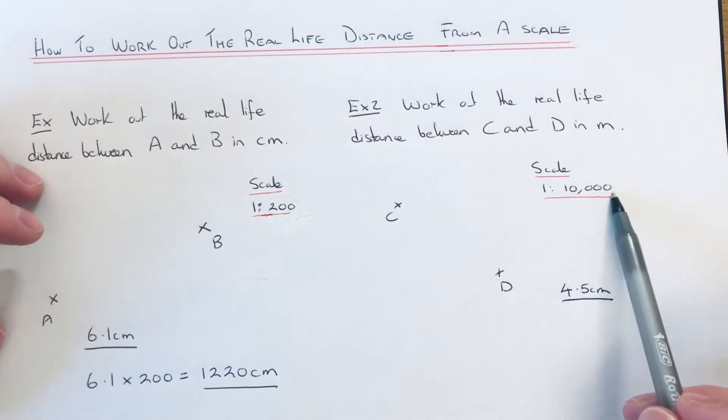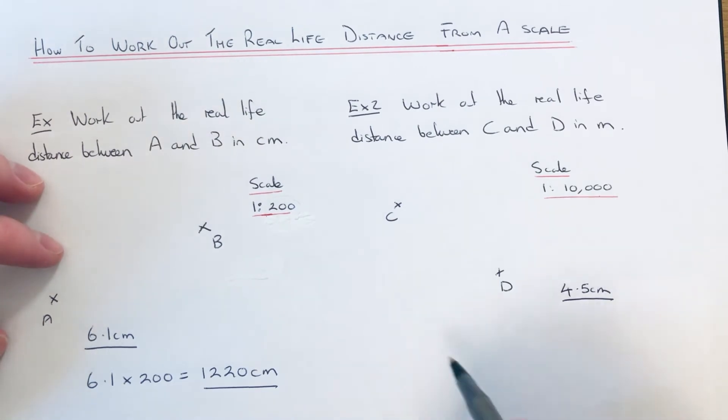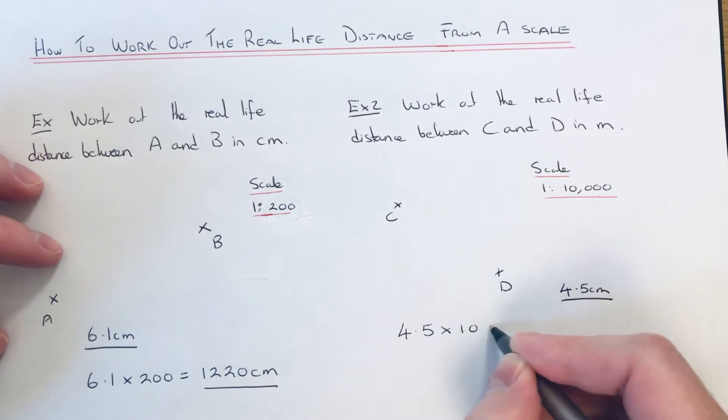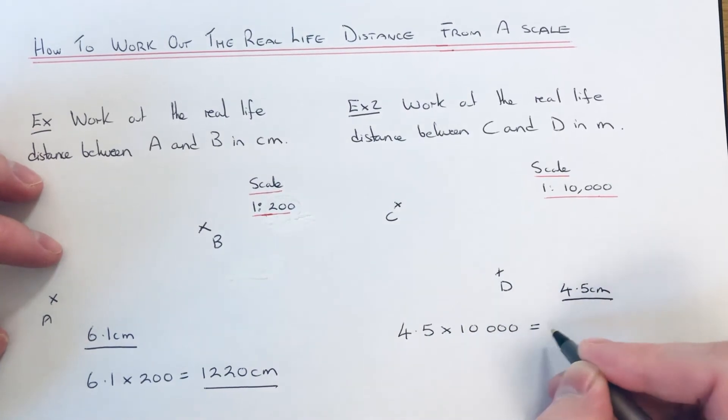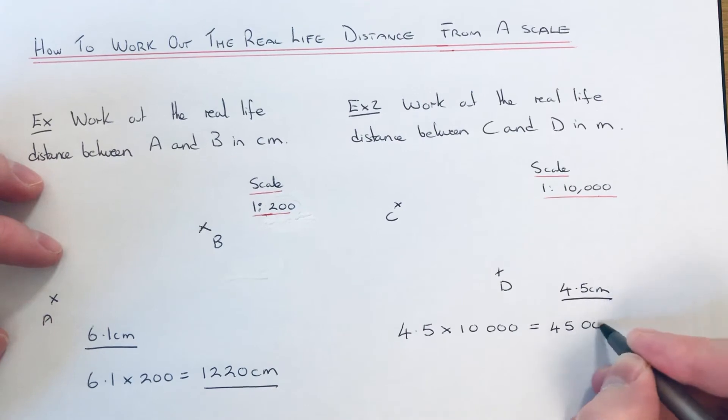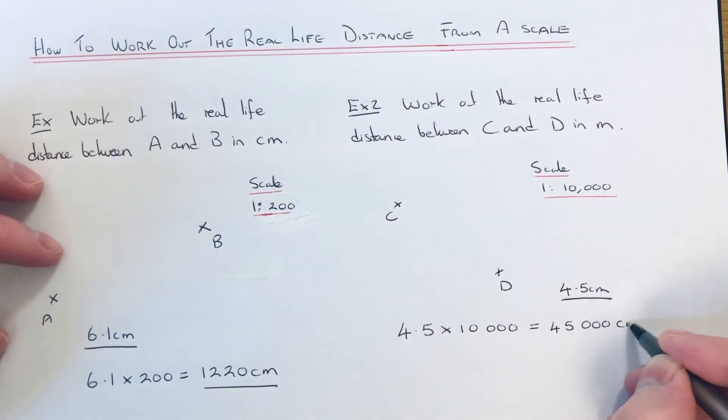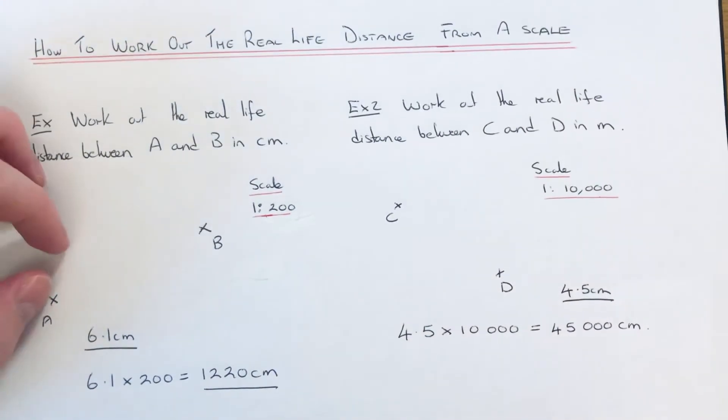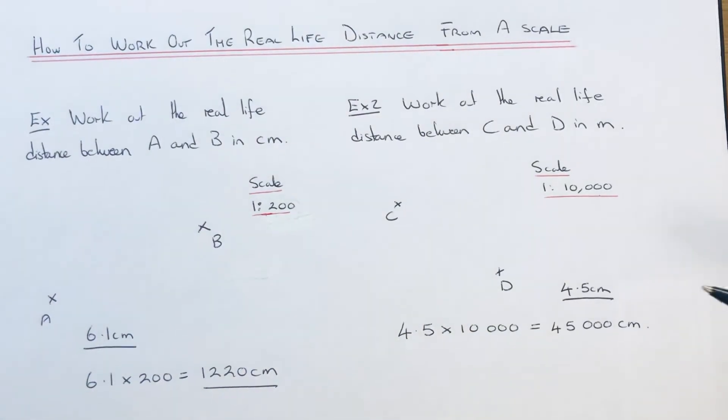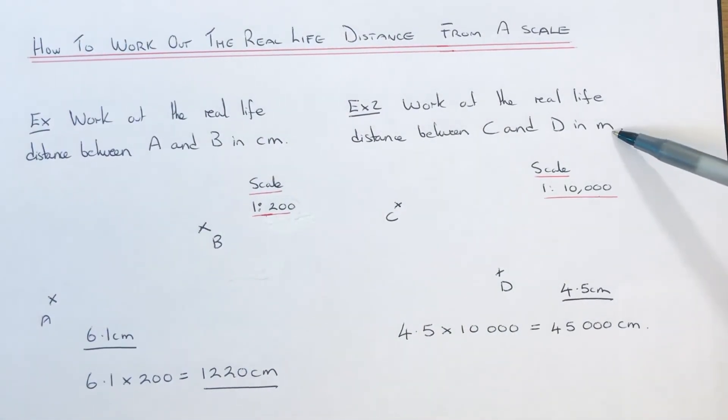This means one centimeter on the map is 10,000 centimeters in real life, so we just need to multiply this by 10,000. That will give us 45,000 centimeters. We're not done yet because remember the question asked to write the answer in meters.